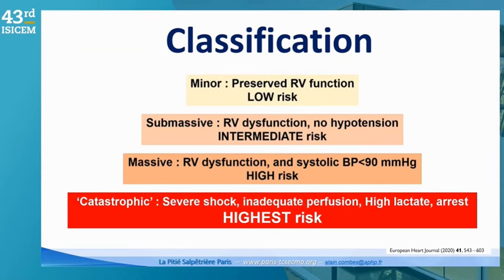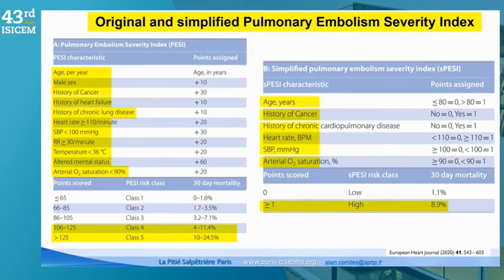Of those high-risk patients, there might be a subclassification between massive — those who have RV dysfunction plus hypotension and are clearly at high risk — and the catastrophic class: patients with the most severe shock, cardiac arrest, high lactate, and signs of inadequate perfusion, mostly skin or brain problems. The pulmonary embolism severity index, the PESI, might not be adapted for those very severe patients.